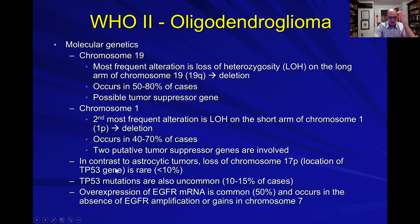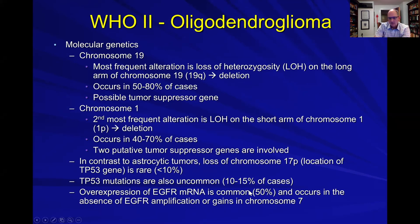In contrast to the astrocytic tumors, loss of chromosome 17p is rare — that's where TP53 is located. Likewise, overexpression of EGFR is also common in oligodendrogliomas.